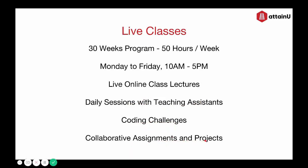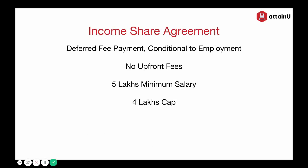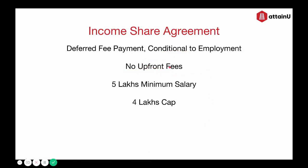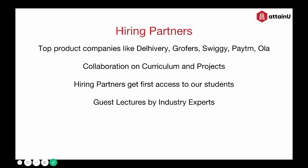The live classes will be conducted by teachers and teaching assistants who are software engineers themselves. To enroll in the program, you do not need to pay anything upfront — no fees at the beginning. Payment is done only after you complete the course and get a job with a minimum 5 lakh rupees salary. This is done through an income share agreement between the student and Attain You. There is a link in the description with all the details of the ISA.